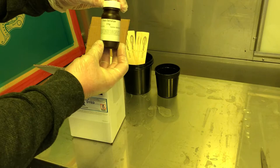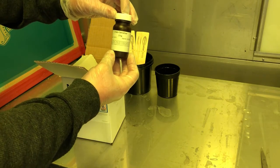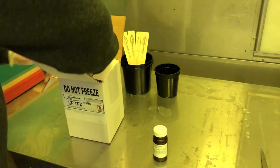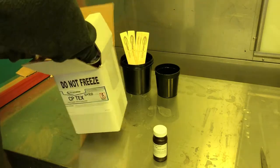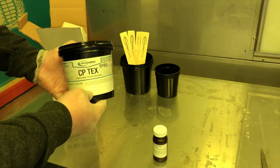This little bottle is the diazo. This is the sensitizer. It is a powder. And then the quart itself will have the unsensitized emulsion in it.